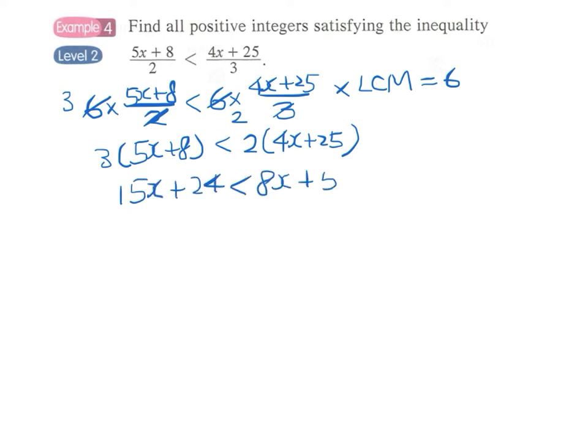And again, we come to a step where we have to move all the x towards one side of the inequality. Therefore, we move minus 8x to the left-hand side so that the left-hand side becomes 7x and the right side will become 50 minus 24, which is 26. So the final answer is x is less than 26 over 7.